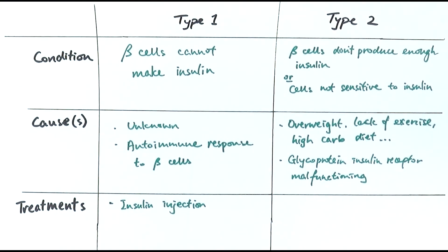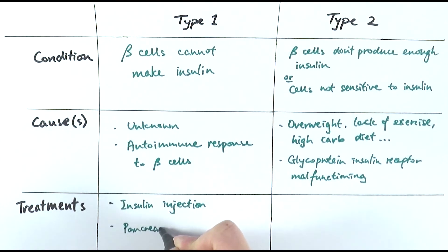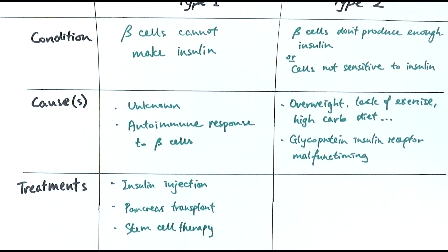Note that insulin injection is a treatment, not a cure. A treatment manages the disease or its symptoms, whereas a cure completely eradicates the disease. There are two possible cures for type 1 diabetes: a pancreas transplant — giving the patient a healthy pancreas with functional beta cells — and stem cell therapy, where stem cells are induced to regenerate islet or beta cells that produce normal insulin levels and are then reintroduced into the patient. If successful, these more permanent approaches mean the patient no longer has diabetes.